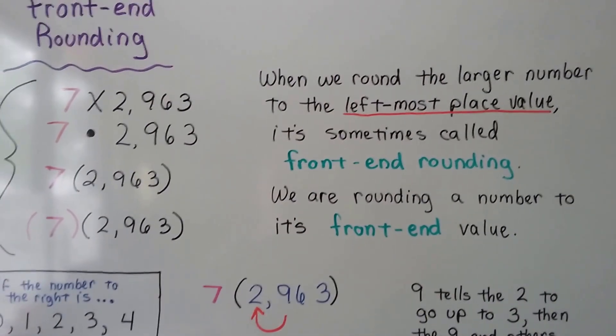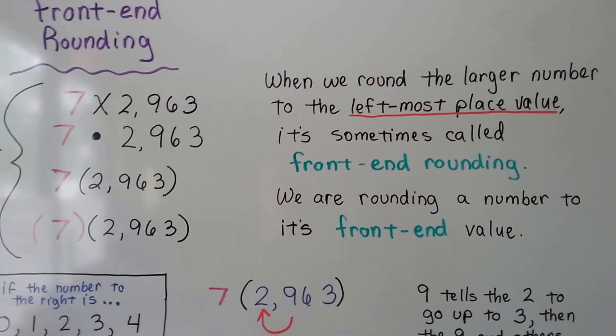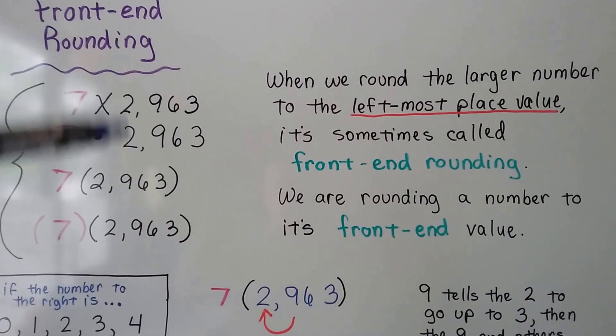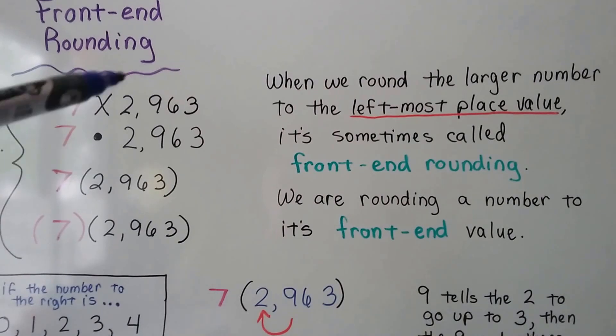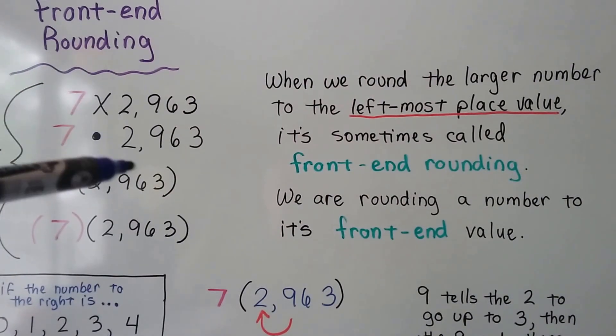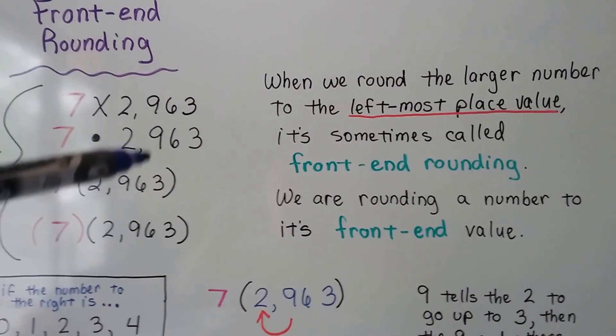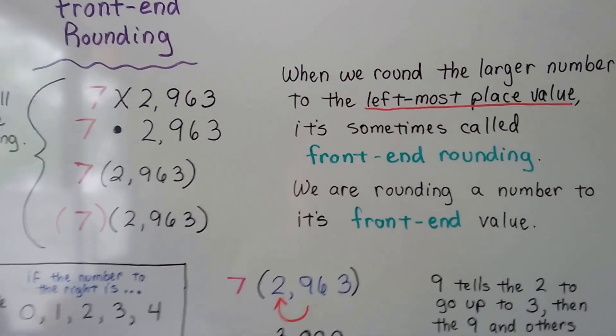So it doesn't matter if it's tens, hundreds, thousands, millions, billions. Whatever this leftmost place value is, we round to that number. The number to its right is going to help us. That's front-end rounding.